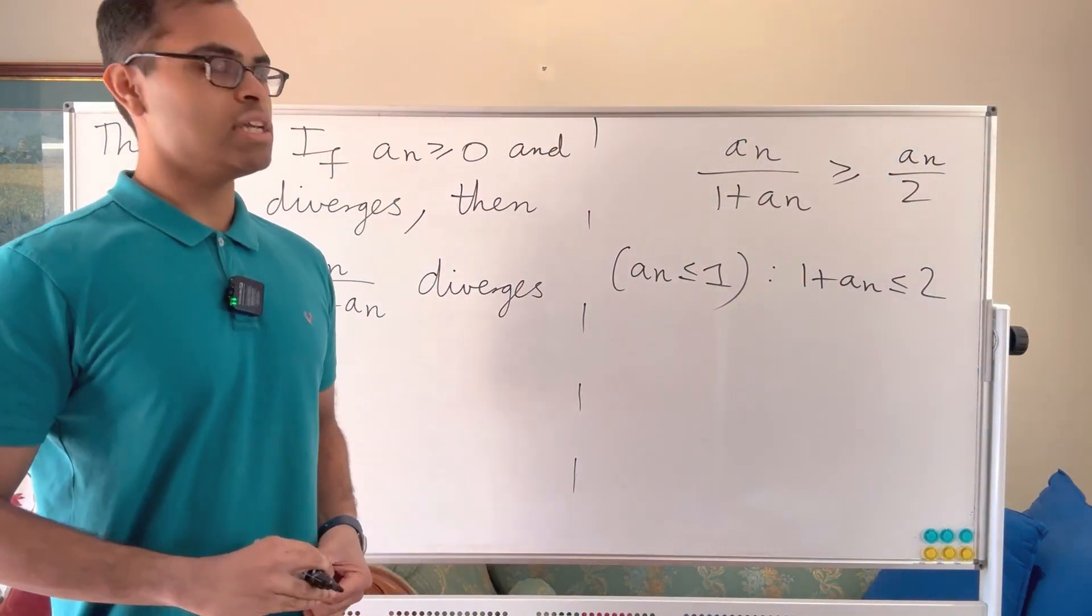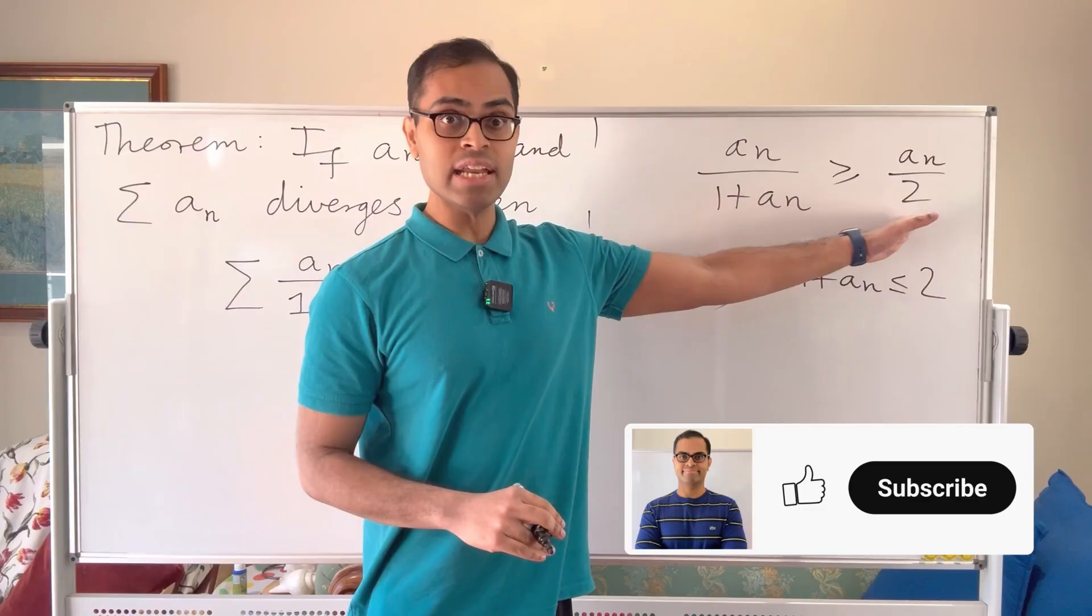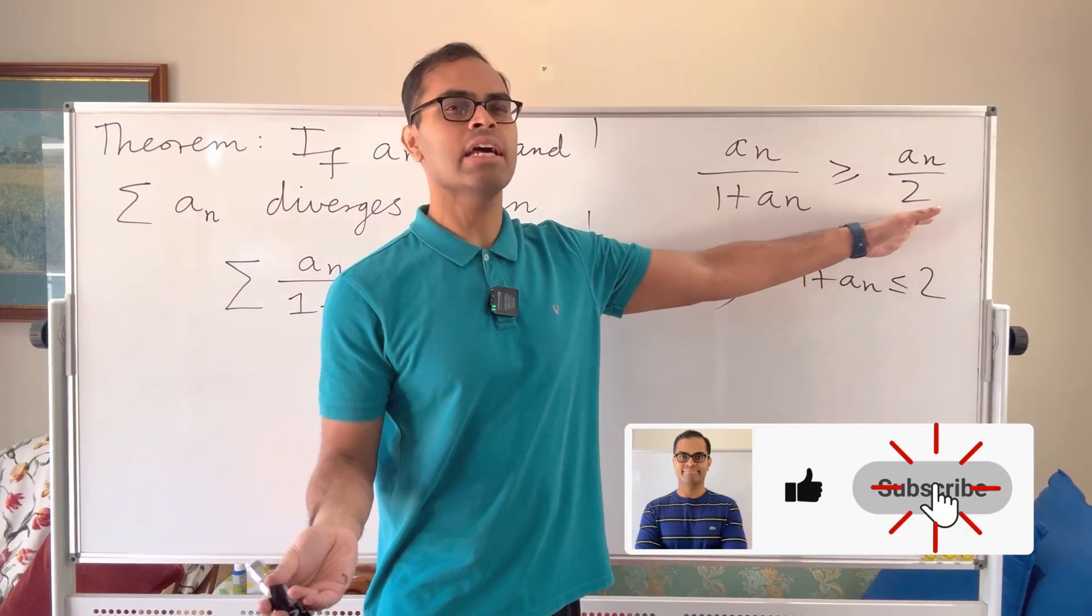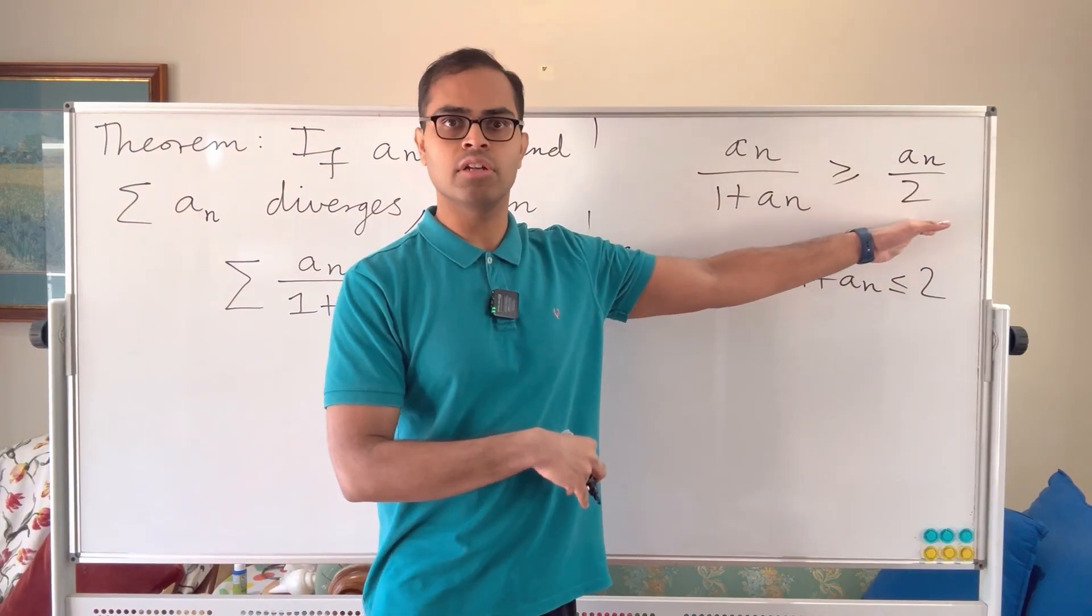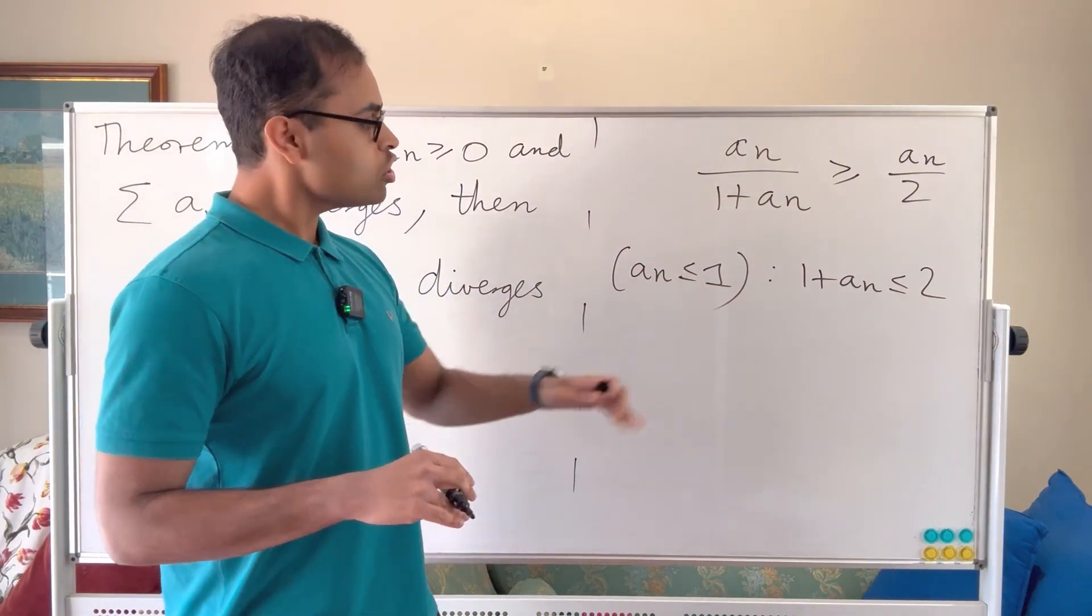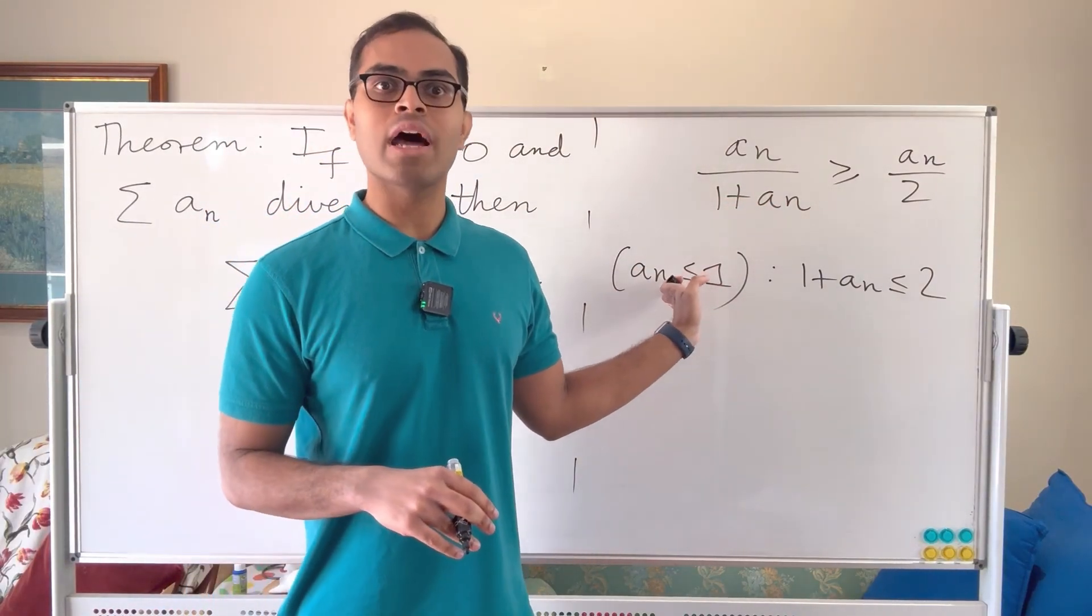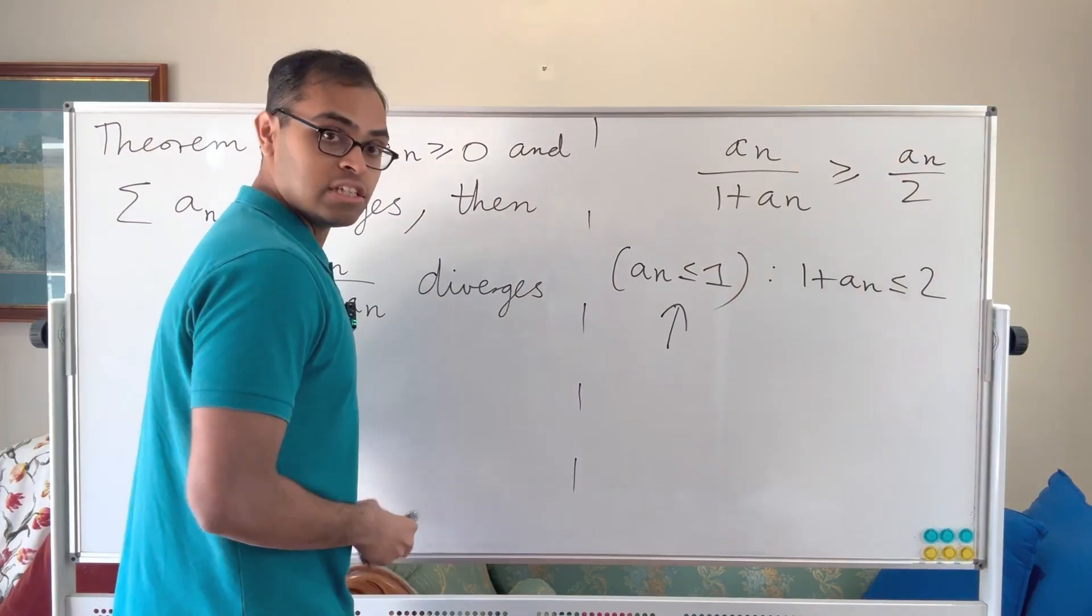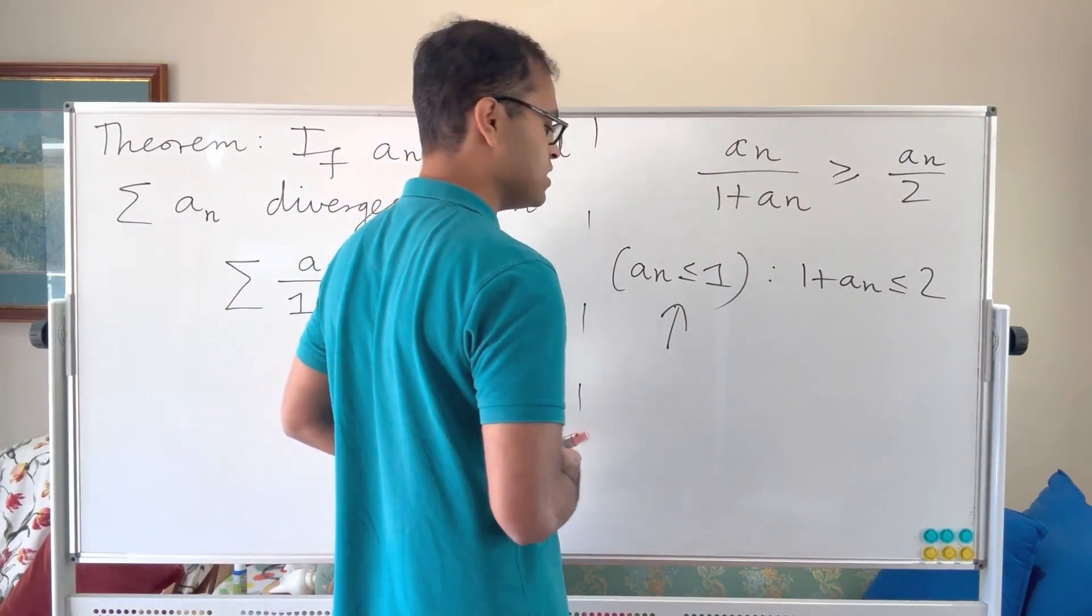And now we see something interesting. We know the right hand side diverges because sum an diverges, dividing by 2 is also going to diverge, and then we can conclude this also diverges using the comparison test. So long as we know that an less than or equal to 1 is true for sufficiently large n, this is true if the limit of the sequence is 0.